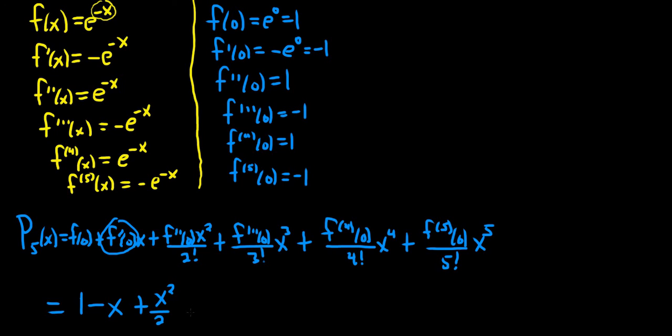The next one is minus, because this is a minus here. So this is a minus 1. 3 factorial is 6. So minus x cubed over 6. Next one's a plus 1. So this will be a plus 1 here. 4 factorial is 24. So plus x to the 4 over 24.